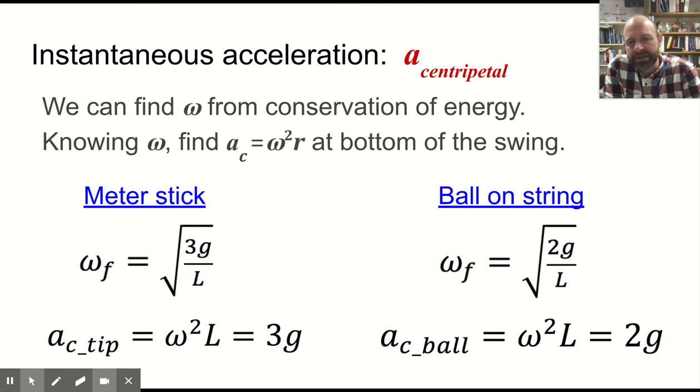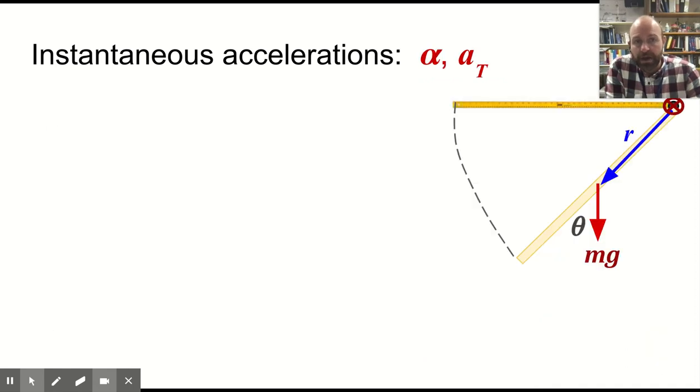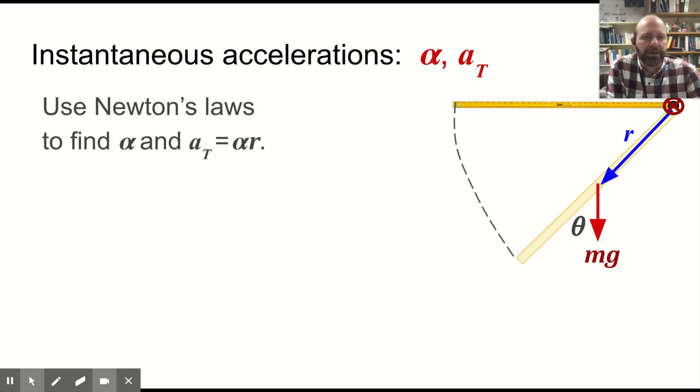But omega is root 3g over L or root 2g over L for the various cases. So we can see that the acceleration at the tip of the meter stick is bigger than the acceleration at the bottom for the ball. We can do the instantaneous acceleration tangentially and rotationally as well.